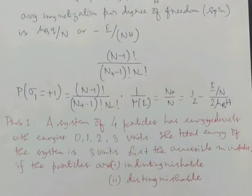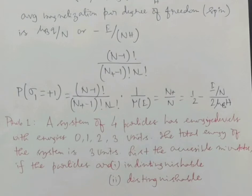The answer indicates we could have calculated p(sigma_1 = +1) in a simpler way. The probability for spin 1 to have projection plus 1 equals the probability for any one of the other spins to have projection plus 1. Thus the required probability equals the probability for an arbitrary spin to have projection plus 1, which is simply the ratio of the number of spins with projection plus 1 to the total number N: namely N+ divided by N.